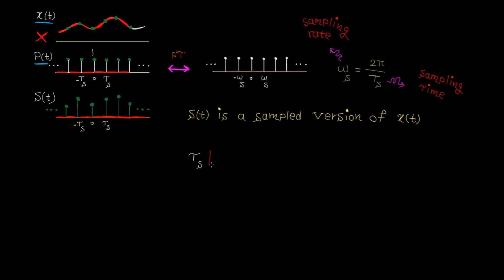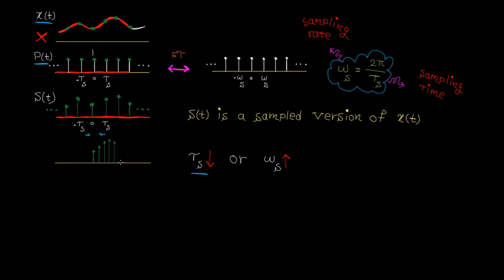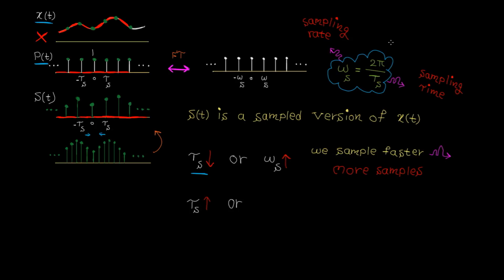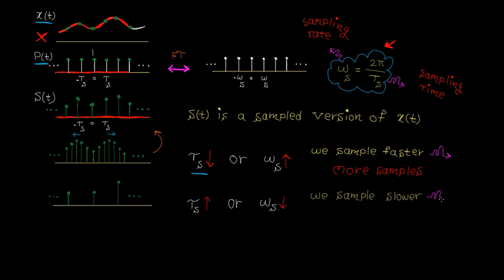When we decrease the sampling time Ts, the sampling frequency ωs increases since there is an inverse relationship between time and frequency. As Ts is smaller, the non-zero samples are closer to each other — we sample faster and end up with more samples. On the other hand, when we increase the sampling time, the sampling frequency decreases, and the distance between non-zero samples is larger, meaning we sample the continuous signal slower and end up with fewer samples.